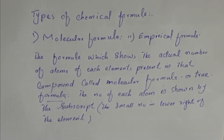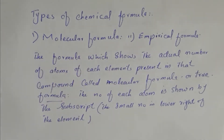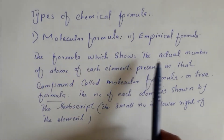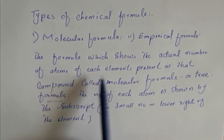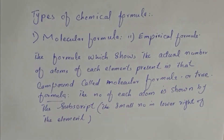Types of chemical formula: how many types of chemical formula are there? There are many types, but in Class 9 we only discuss two types of chemical formula: molecular formula and empirical formula. The molecular formula is the formula which shows the actual number of atoms of each element present in that compound or molecule.